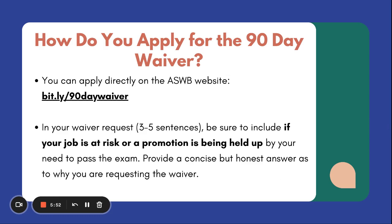How do you apply? The ASWB website will be the way that you will find this information. We have a link here which we will also include in the YouTube video description. But if you just type in 'ASWB 90-day waiver' and Google that, you will find exactly where you are looking for that information. It used to be a much more complicated process — you'd have to get your employer to say that your employment is at risk, and it was a much more strenuous process. Now you can do it all online.